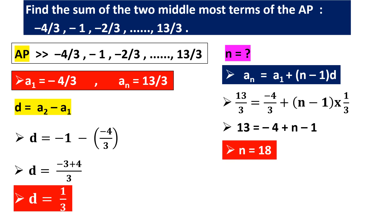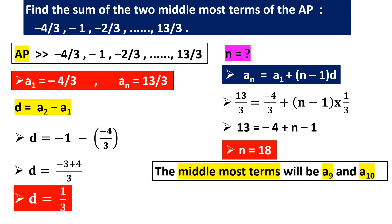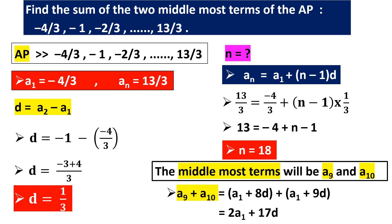There are 18 terms in this AP, and 18 is an even number. When there are an even number of terms, we do not get a single middle term; we get two middle terms — the 9th and the 10th terms. So a9 = a1 + 8d and a10 = a1 + 9d, and the sum of the two middlemost terms becomes 2a1 + 17d. You just substitute the values of a1 and d into this expression to get the answer.